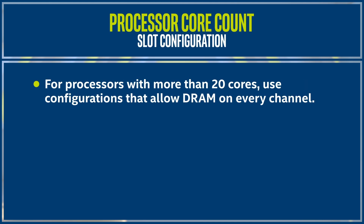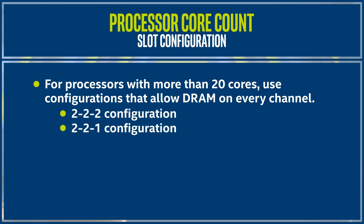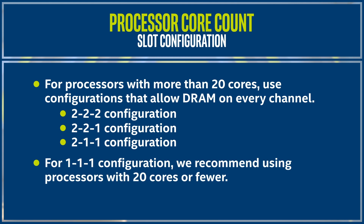Those are the 2-2-2, 2-2-1, and 2-1-1 configurations. The 1-1-1 configuration should only be used with processors with 20 cores or fewer, to make sure the cores aren't starved for memory bandwidth.